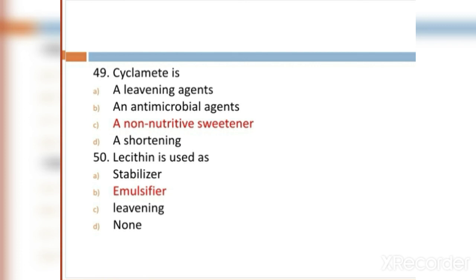MCQ 49: Calcium titanate is: Option A: a leavening agent. Option B: an antimicrobial agent. Option C: a non-nutritive sweetener. Option D: a shortening. Option C, a non-nutritive sweetener, is the right answer.